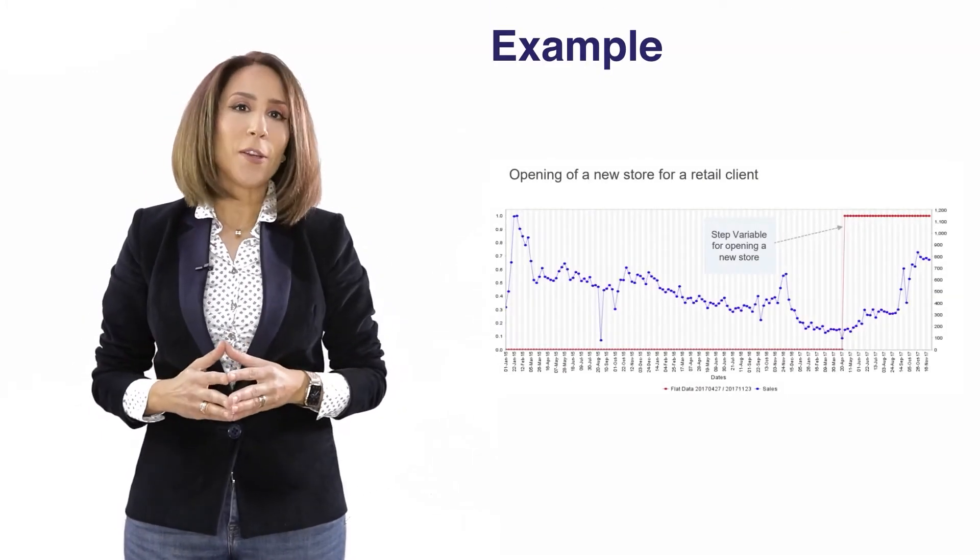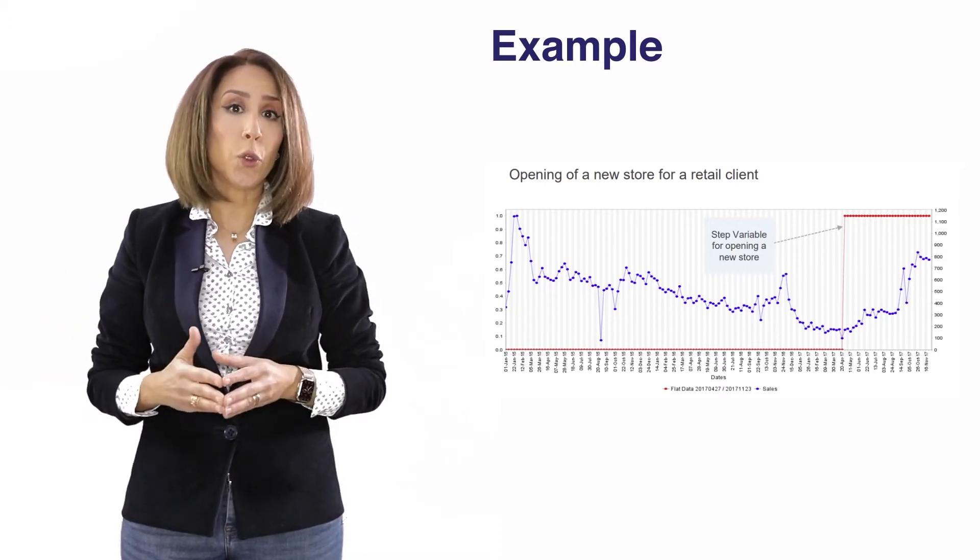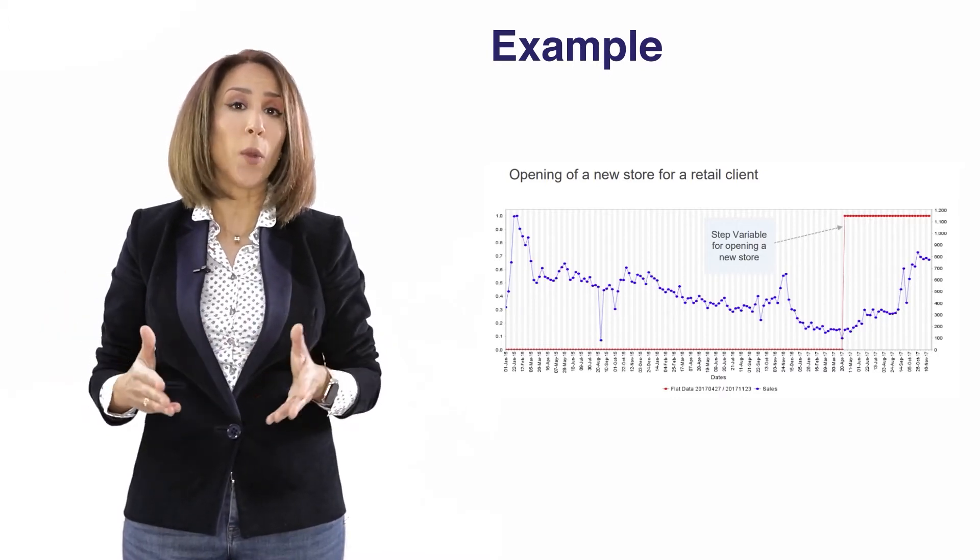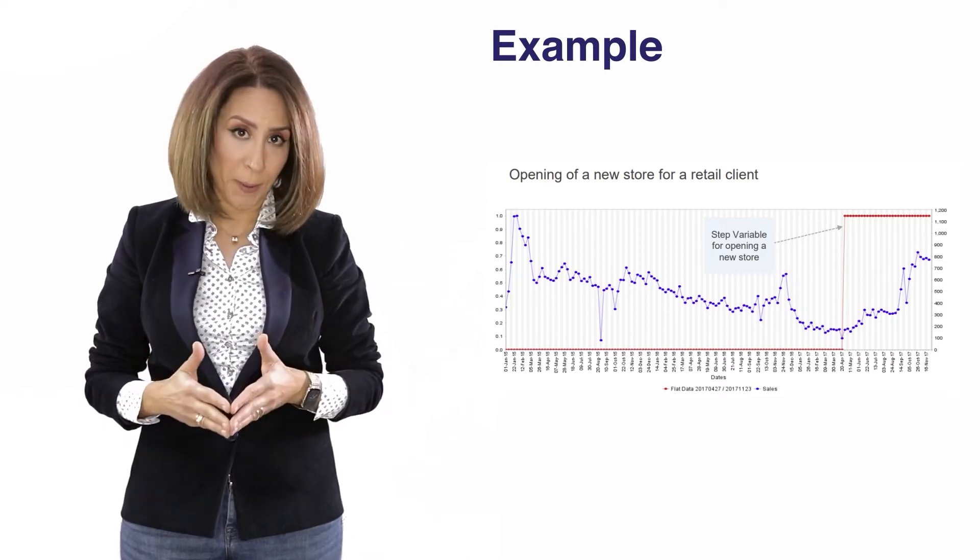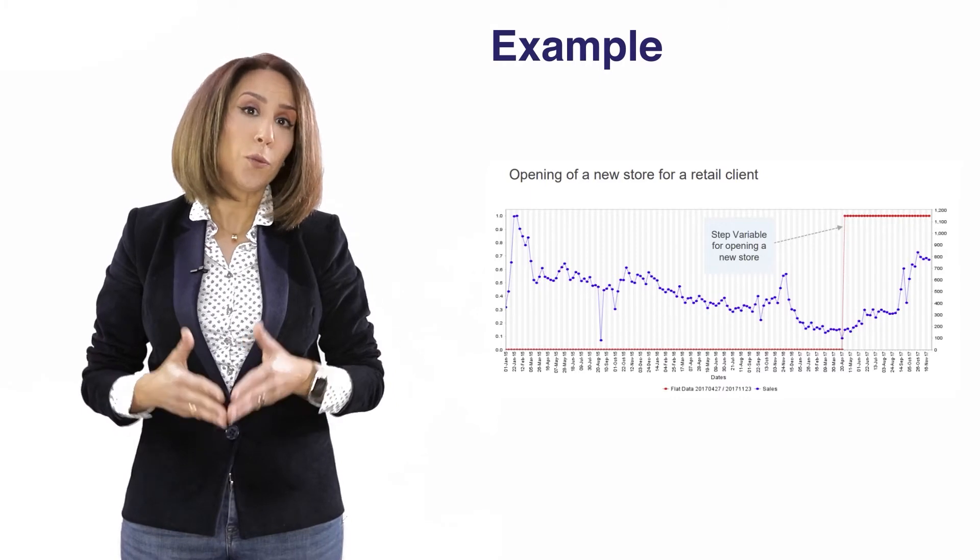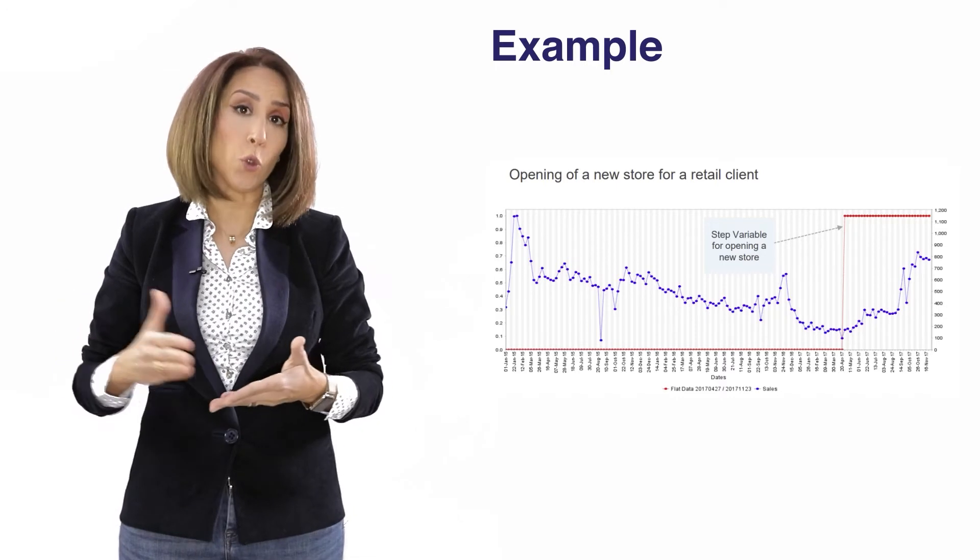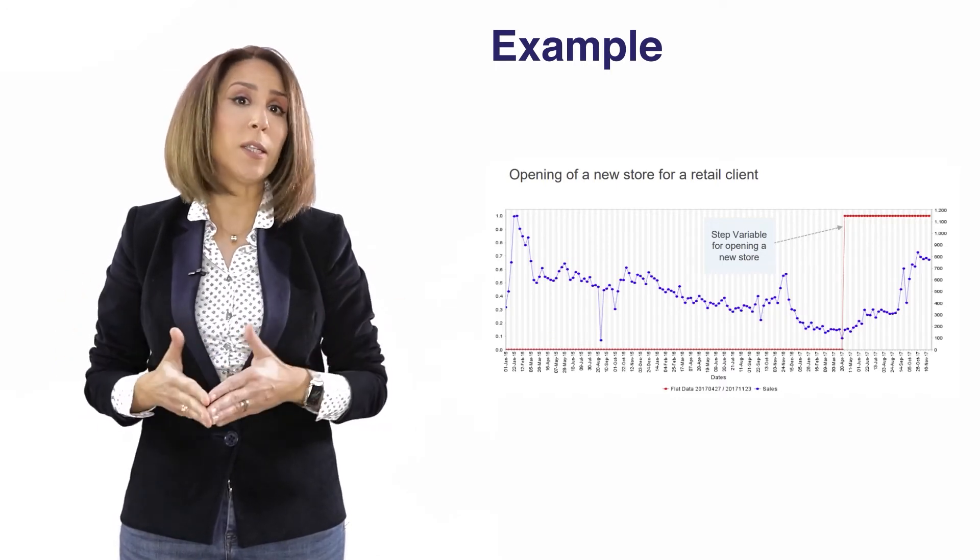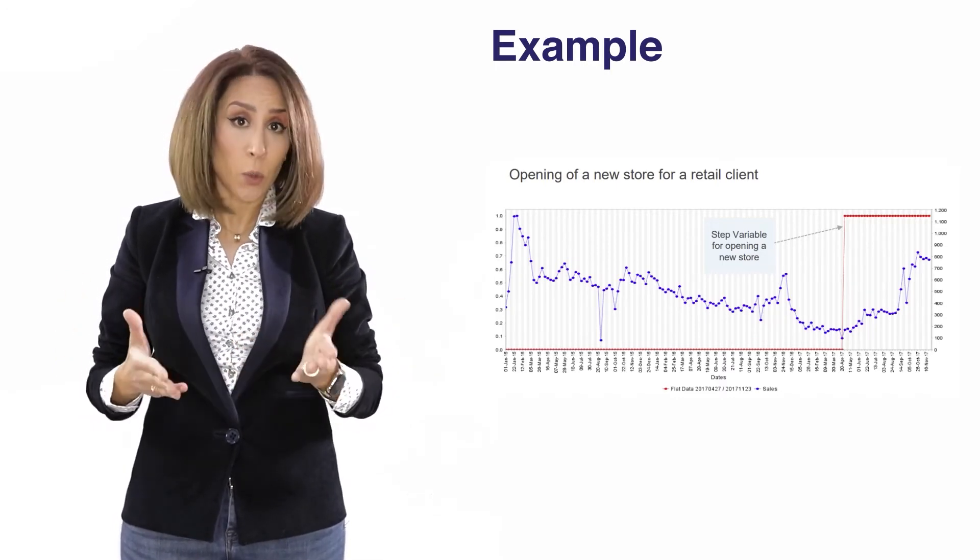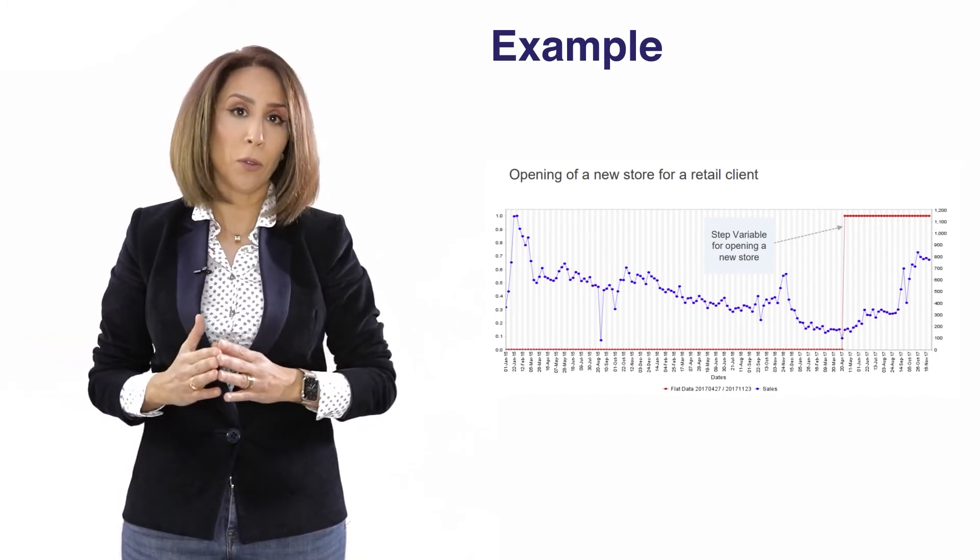For example, in the context of a retail client that operates through different stores, we know that there has been a period where there has been a store opening and we need to create a window variable in order to model the fact that at a certain period of time, we started having or seeing that new store. So the window will start at the date at which the store has opened and will continue on until the end of the model period.